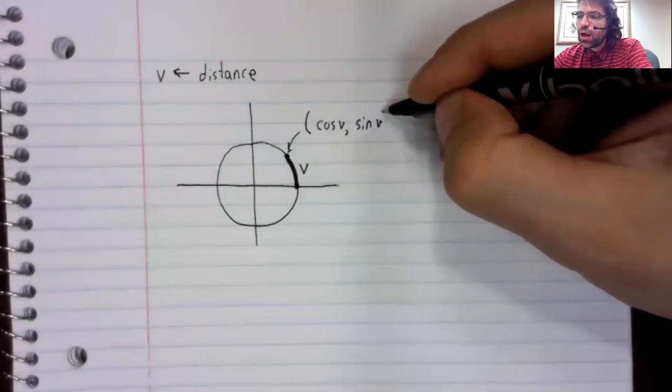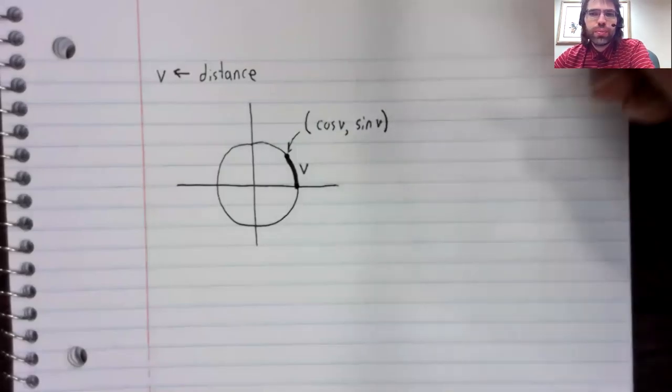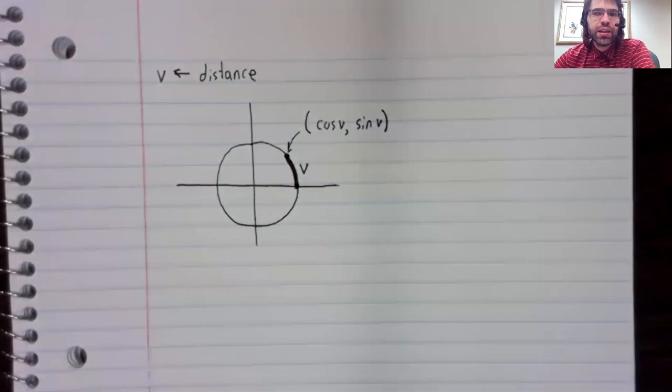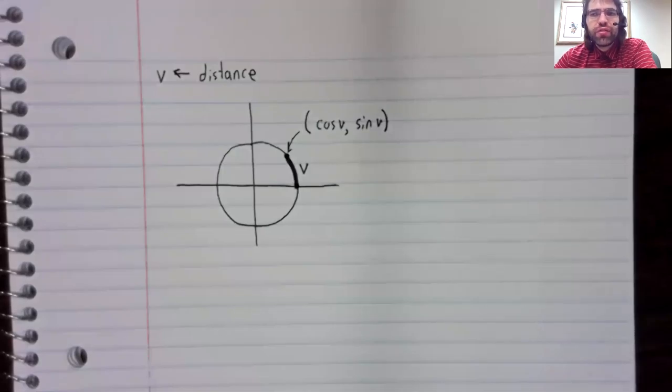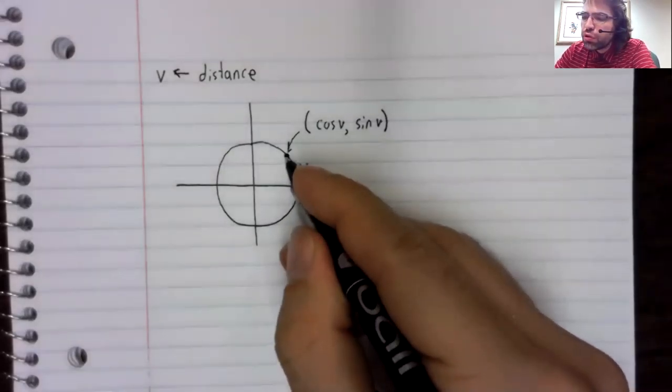And the point we travel to will have an x coordinate and a y coordinate. And the x coordinate will be the cosine. And the y coordinate will be the sine.